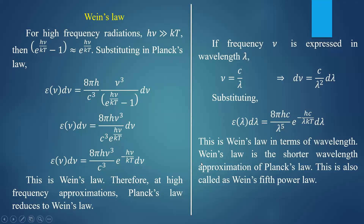At shorter wavelength, Planck's law of radiation reduces to Wien's law of radiation, also called Wien's fifth power law. Energy density is inversely proportional to λ⁵ and also has an exponential decay term.